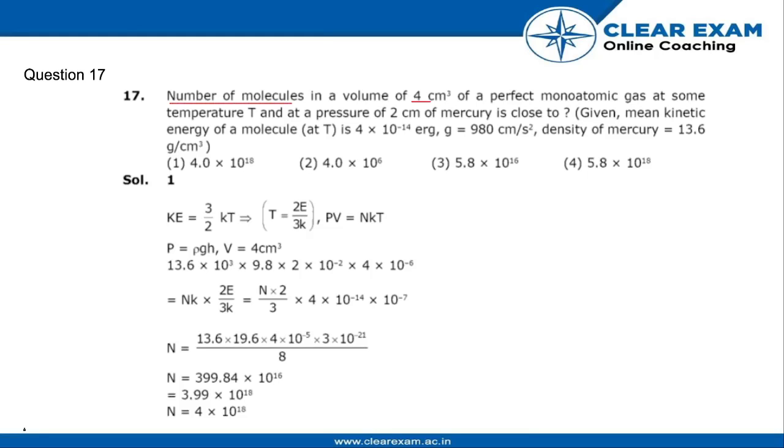The number of molecules in a volume of 4 cm³ of a perfect monatomic gas at some temperature T and a pressure of 2 cm of mercury is close to? We are given all the values of the constants.